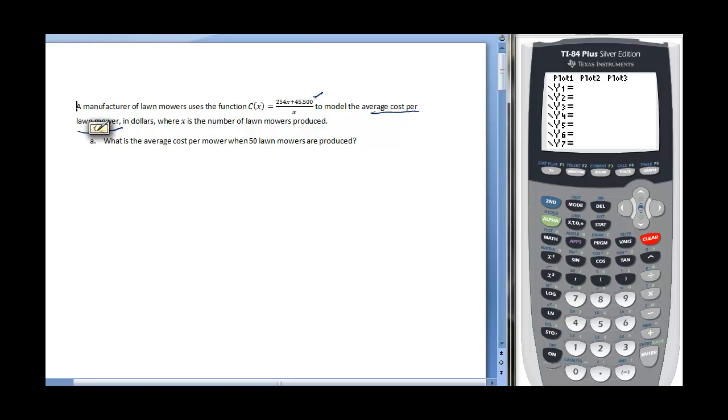In our numerator, the 45,500 represents the initial cost of setting things up to manufacture these lawn mowers, and then the 254 is pretty much the cost per unit. It takes so much materials to go into the mower. They want to know the average cost of a lawn mower when 50 lawn mowers are produced.